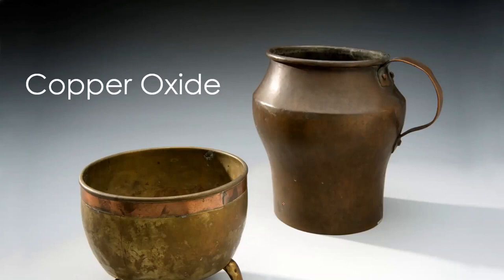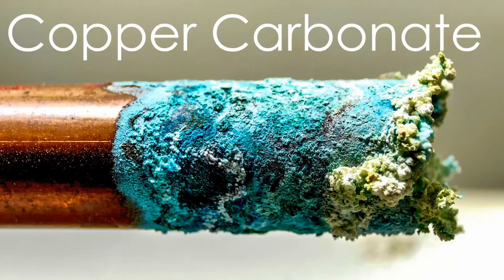Another example of corrosion is copper oxide. If you see copper looking very blackish, it is because copper has reacted with oxygen to form a layer of copper oxide on its surface. Another example is copper carbonate — when copper reacts with carbon dioxide, it forms copper carbonate, which is bluish-green in color.